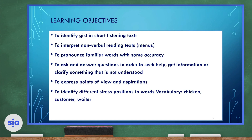We're going to identify gist in short listening texts. We will interpret non-verbal reading texts, which are menus, and we will pronounce familiar words with some accuracy. We will ask and answer questions in order to seek help, get information, or clarify something we don't understand. We will express points of view and aspirations or wishes, and we will identify different stress positions in words like chicken, customer, and waiter.